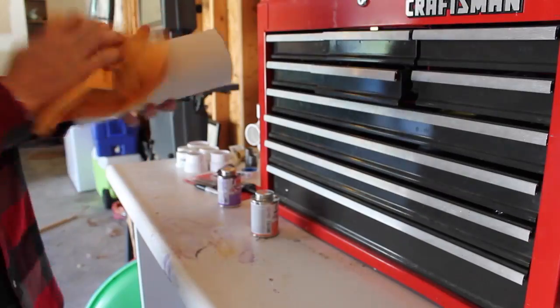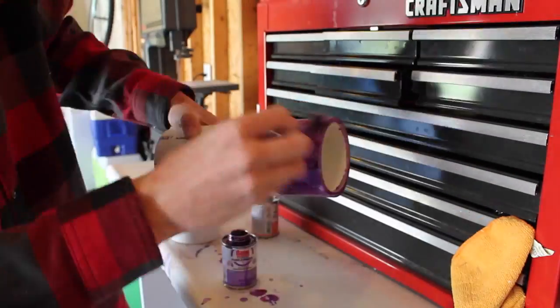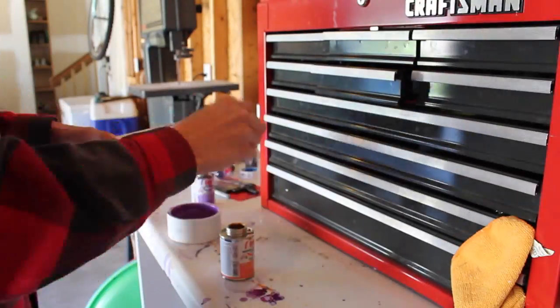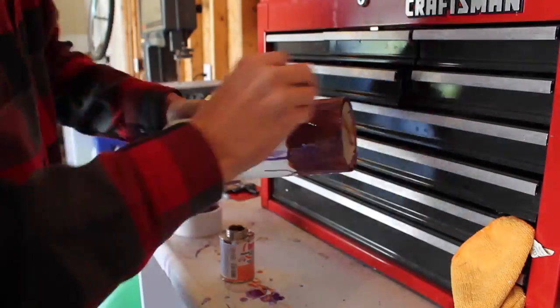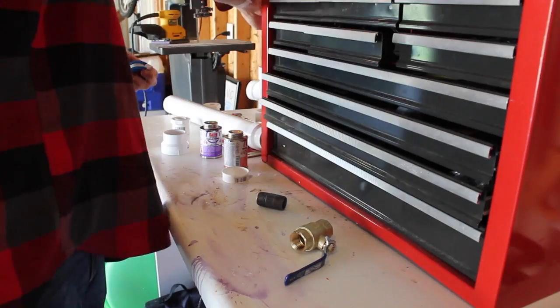Take the orange PVC cement and apply it liberally to both pieces that will be connected. Press firmly together and let rest for 24 hours once they have been cemented.